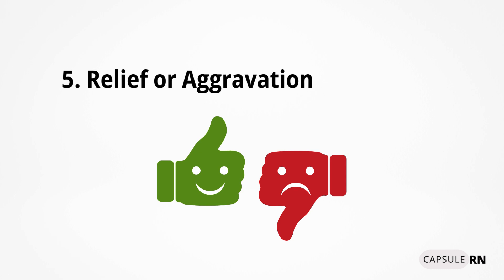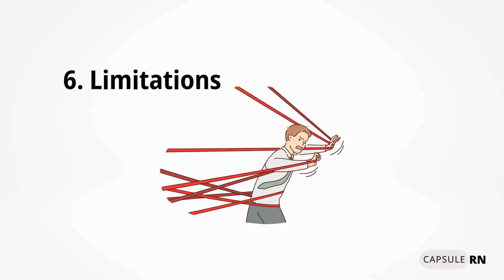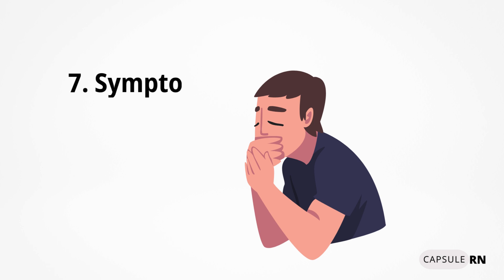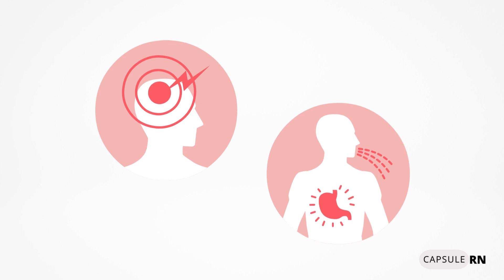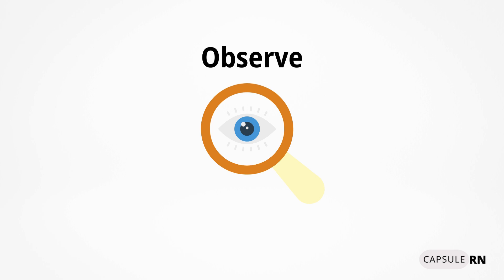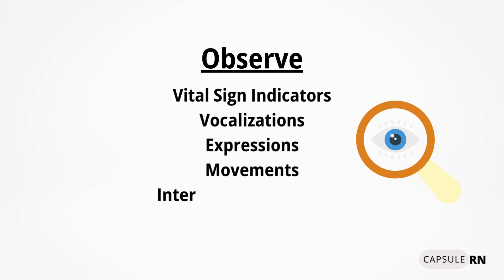A fifth question to ask is about relief and aggravation of the pain. Is there anything that relieves or lessens the pain? Is there anything that aggravates the pain or makes it worse? A sixth question to ask about is limitations the pain causes — does the pain limit any movements or activities for the patient? A seventh question to ask is if the pain is accompanied with any other unwanted symptoms, such as headache or nausea. In review, these are the types of questions you want to ask regarding a patient's perception of their pain. We also want to observe any pain characteristics and behaviors, such as vital sign indicators, vocalizations, expressions, movements, and interactions and activities.